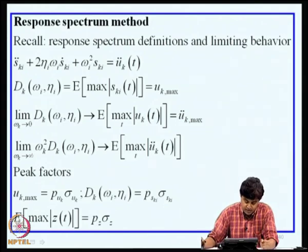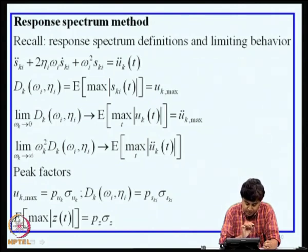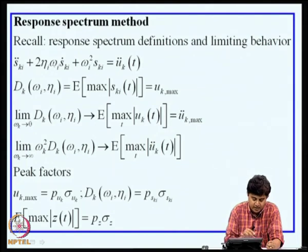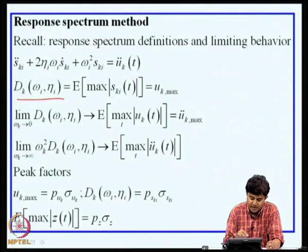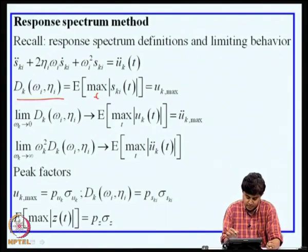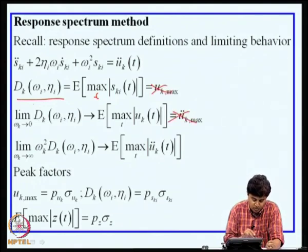That completes the random vibration analysis. Let us now consider the question of the response spectrum-based method — how to analyze response when inputs are specified in terms of individual response spectra and a coherency function. We quickly recall the response spectrum definitions and limiting behavior. For the acceleration u_k double-dot of t and the response of an oscillator with natural frequency omega_i and damping eta_i, the relative displacement response spectrum S_{ki} is interpreted as the expected maximum of S_{ki}(t) over time t.